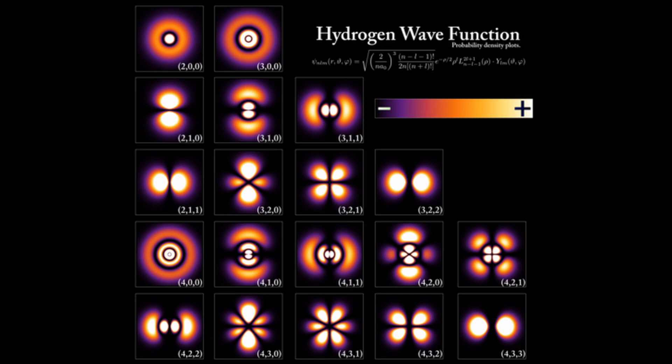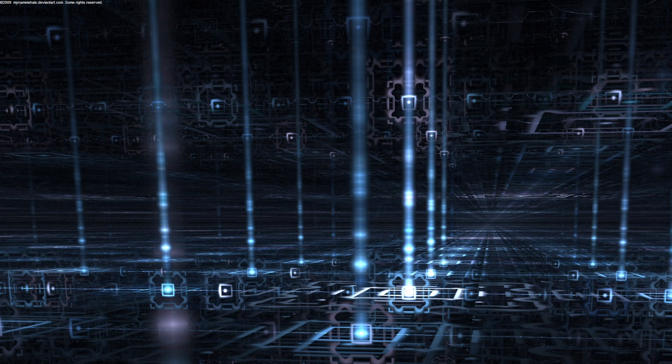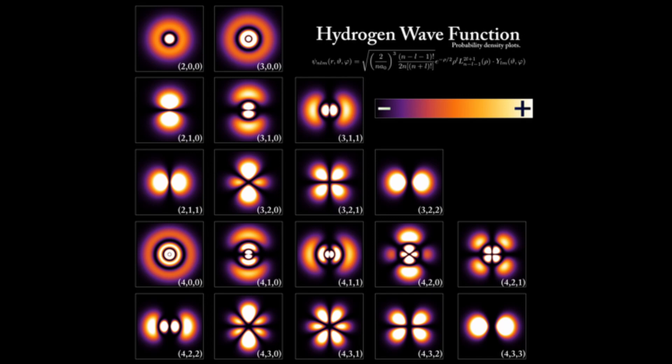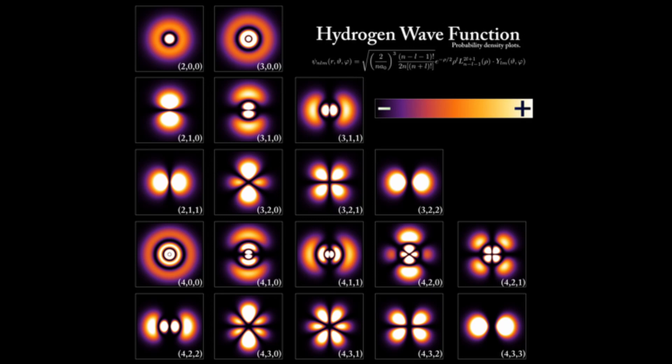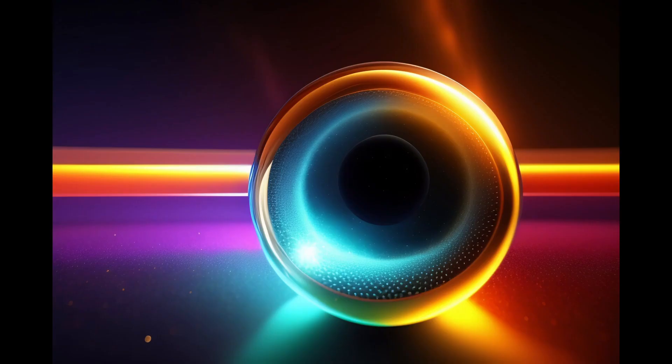Quantum mechanics is a fundamental theory in physics that describes the behavior of matter and energy at the smallest scales. It provides a mathematical framework to understand the behavior of particles and systems that are too small to be observed directly. At its core, quantum mechanics is based on the idea that particles, such as electrons and photons, exist in a state of superposition, meaning that they can exist in multiple states or locations simultaneously. This is in contrast to classical mechanics, which assumes that particles have a definite position and velocity at any given time. One of the key principles of quantum mechanics is wave-particle duality, which states that particles can exhibit both wave-like and particle-like behavior depending on how they are observed. This duality is captured by the mathematical framework of quantum mechanics, which uses wave functions to describe the probability of finding a particle in a particular state.